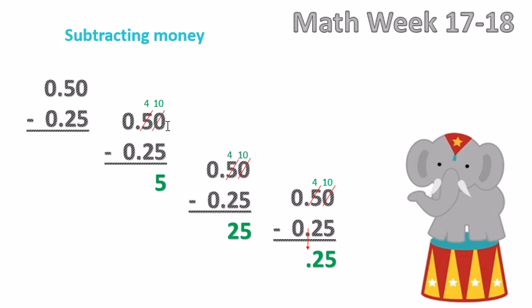Now we know we cannot subtract 5 from 0. So just like any other subtraction problem where we have to regroup, you're going to make the 0 a 10 by borrowing 1 from the 10 space, which in this case is the number 5.